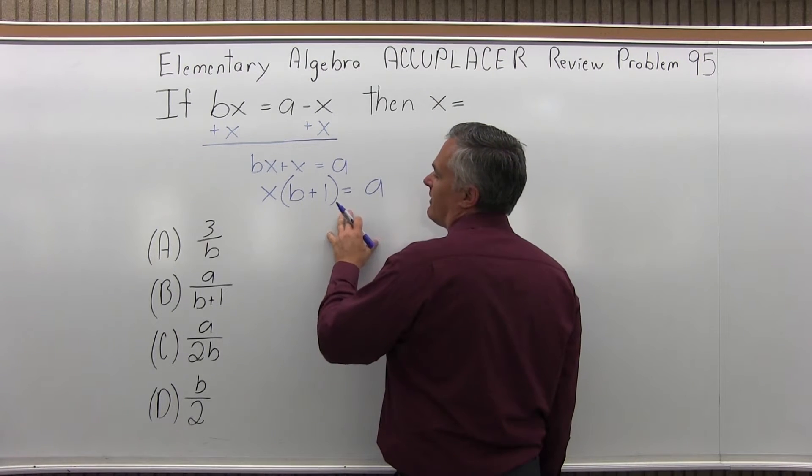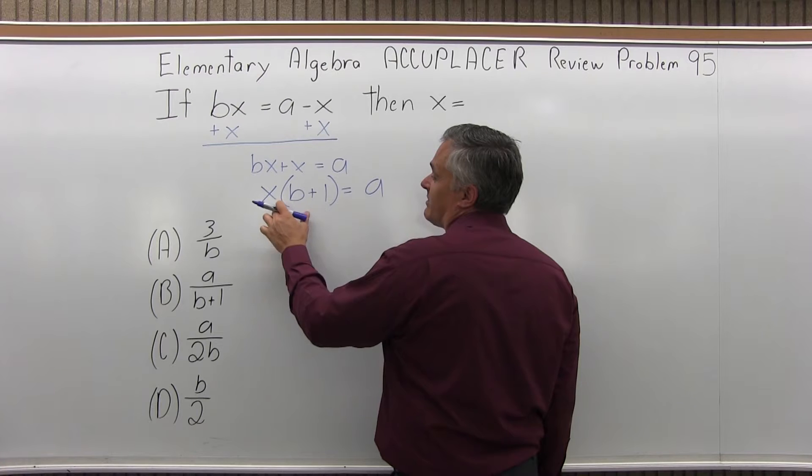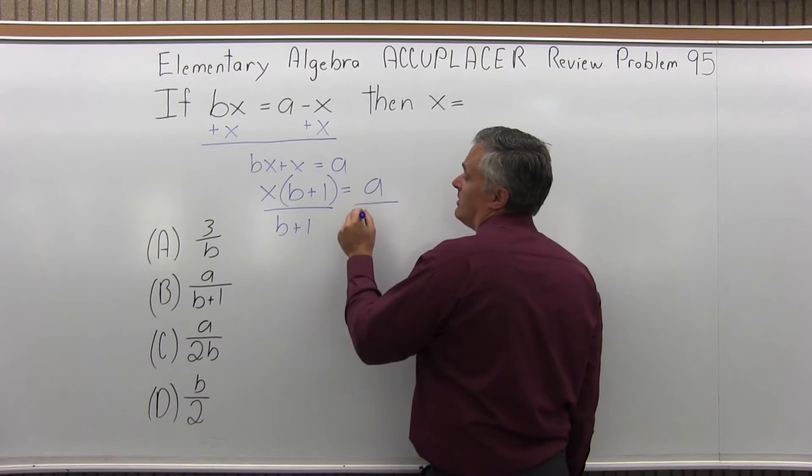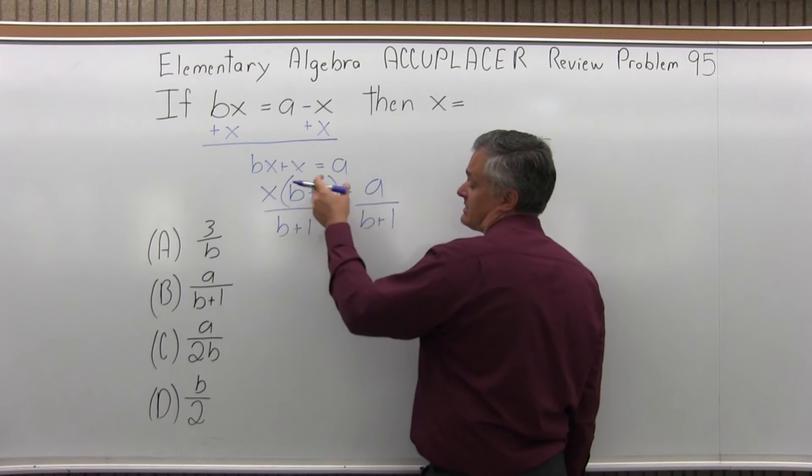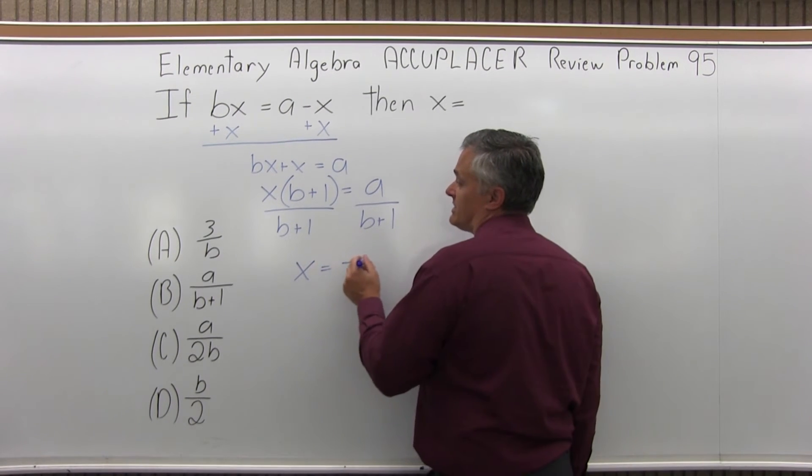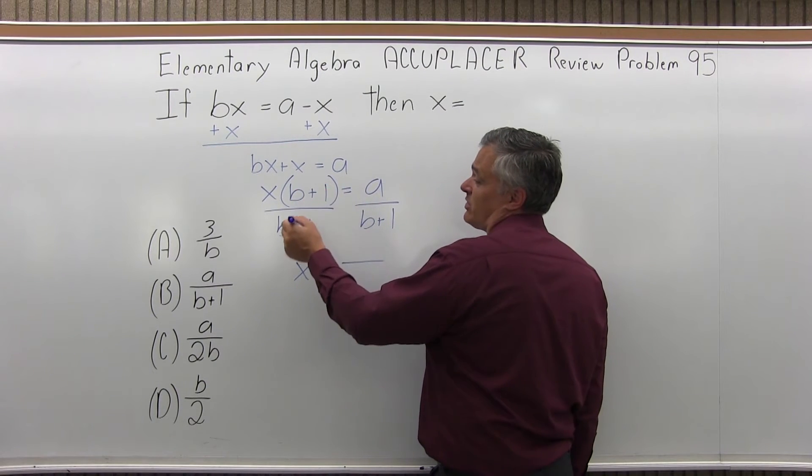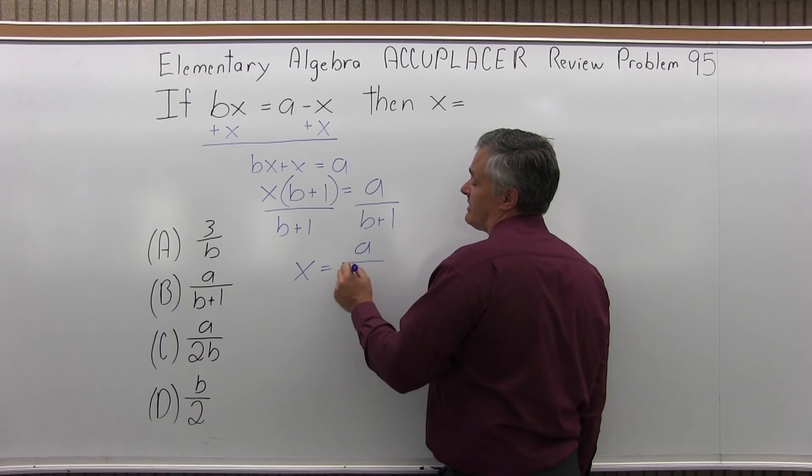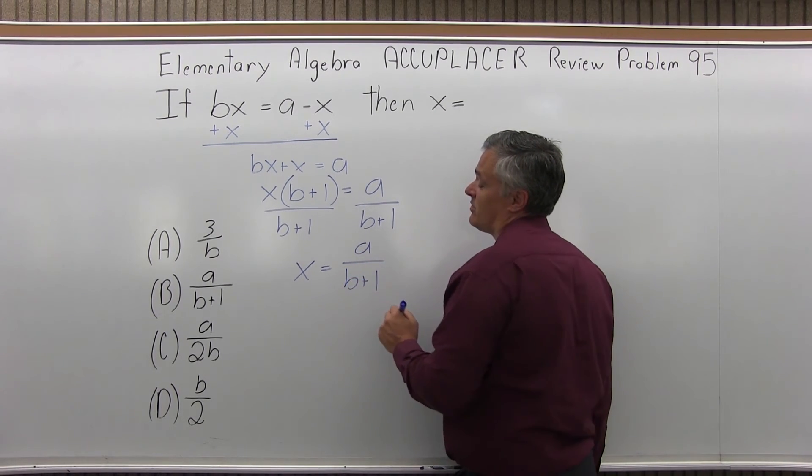And now to finish it off, I want to have the x by itself. So I will divide both sides of my equation by what's being multiplied times the x, the stuff in parentheses here, the B plus 1. So I'll have x equals, and B plus 1 over B plus 1 they cancel on the left nicely. And on the right, it doesn't really reduce much. It's a over B plus 1.